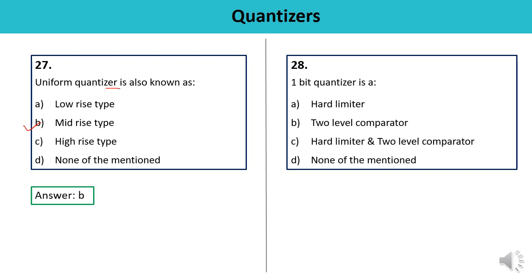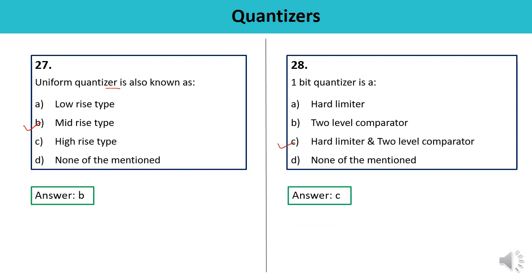Question 28: A one-bit quantizer is also known as a two-level comparator or a hard limiter. Since both descriptions apply, the answer is C — two-level comparator and hard limiter — confirmed correct.